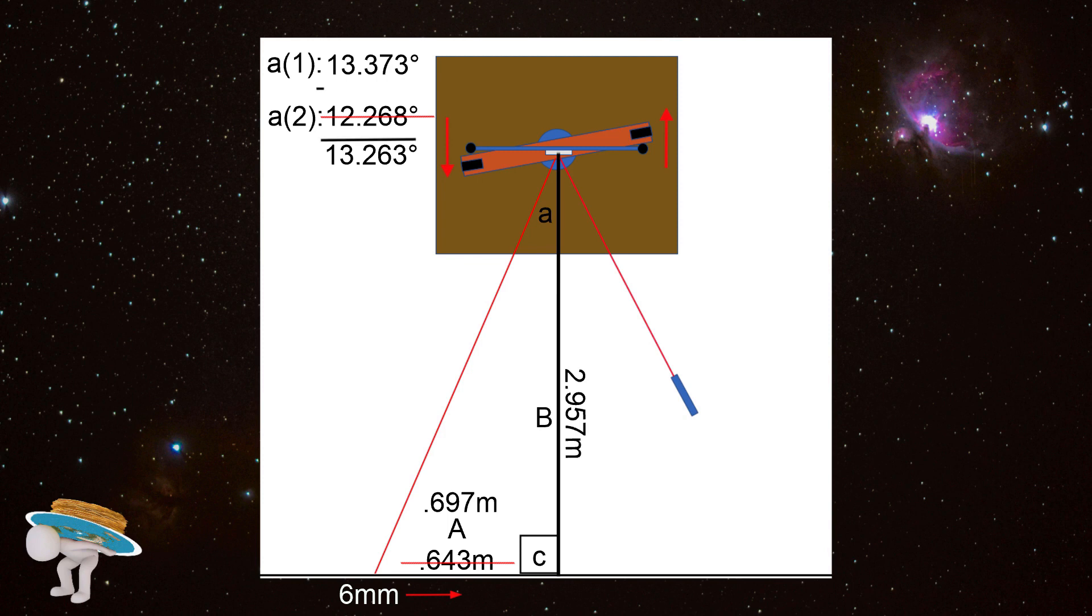And then when we run the math, the difference between the angles, we come up with 0.110, which is still a movement. And when you think about it, it's pretty amazing that we are able to measure a 0.11 degree deflection.